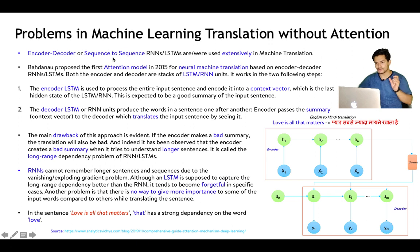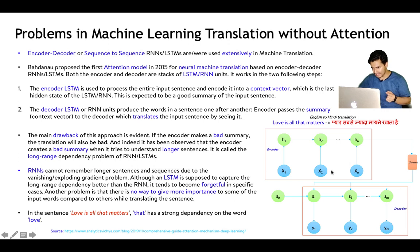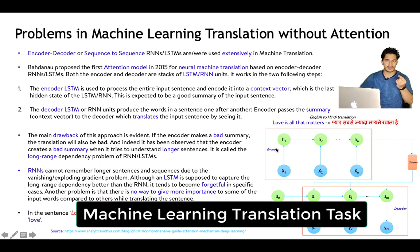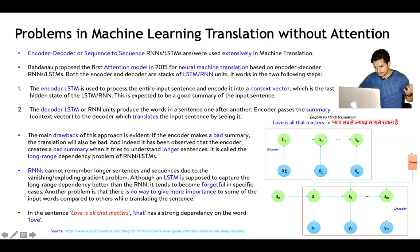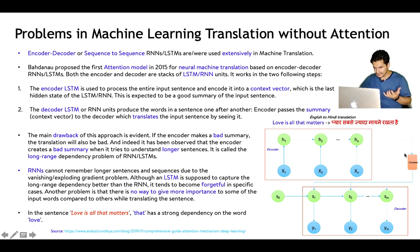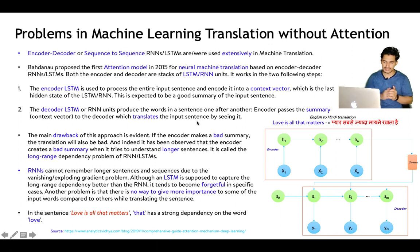The first model proposed for machine translation was an encoder-decoder, or sequence-to-sequence, RNN or LSTM-based network. There is an encoder component and a decoder component. The encoder processes the entire input — for example, 'love is all that matters' — and encodes it into a context vector, which is the last hidden state of the LSTM or RNN. This last hidden state is expected to be a good summary of the input sentence. The decoder then takes this context vector and translates the input sentence by generating one word at a time.